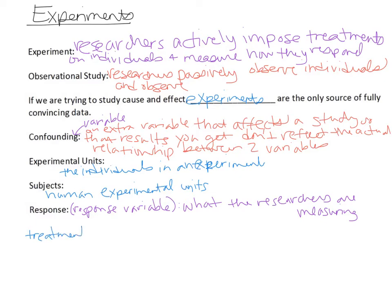Another important vocab word is treatment. A treatment is a condition you apply to the experimental units. For example, giving people medicine or telling them to exercise are going to be treatments. We'll do a few examples where you have to identify them.